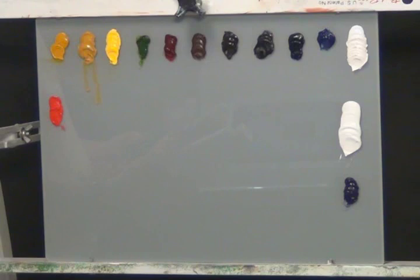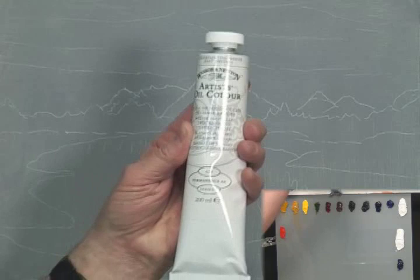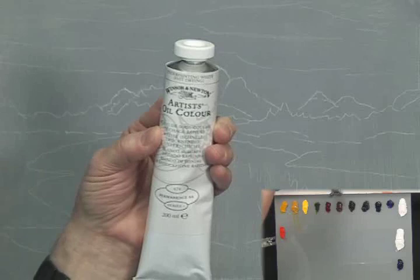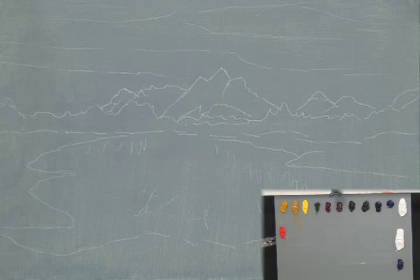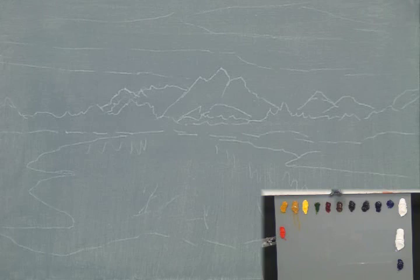Many times with the Bob Ross technique, he uses liquid white, which is white thinned down with a lot of linseed oil to make it dry very slowly and help the paint move across the canvas very well. Underpainting white from Windsor Newton actually dries faster. I'm going to use it in this scene because it's a nice winter scene with a lot of snow and beautiful clouds that I want to blend together, but I'd also like it to dry a little faster. So you'll see me using underpainting white probably in place of the liquid white. Let's get going on this painting.